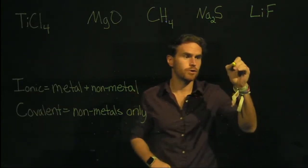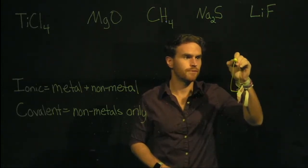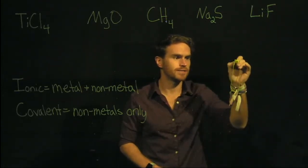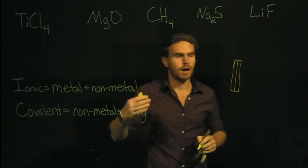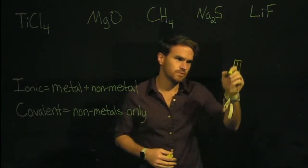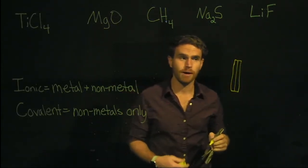Metals are going to be found first and foremost in the first two columns on the periodic table. This includes lithium, calcium, magnesium, those first two columns on the periodic table. Those are all metals.